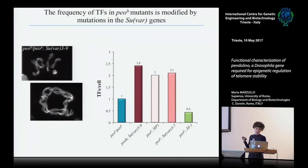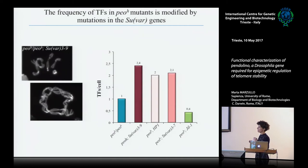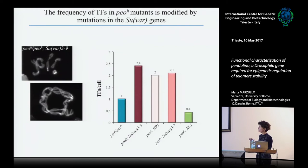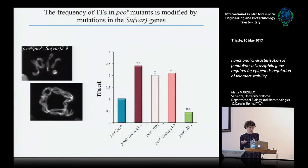Interestingly, we found that mutations in the main heterochromatin complex — SUVAR3-9, HP1, SUVAR3-7 — combined with mutations in Pendolino strongly enhance the fusion phenotype. The fusion frequency increased from one fusion per cell to 2.4 fusions per cell, suggesting a strong genetic interaction between Pendolino and heterochromatin status. Interestingly, we also found that mutations in the JIL-1 kinase, which mediates euchromatin formation, rescue the fusion frequency. So these results indicate a relationship between fusions in Pendolino and the status of the chromatin.